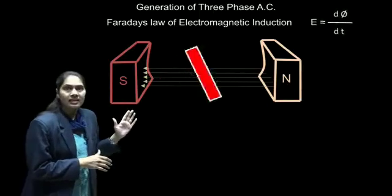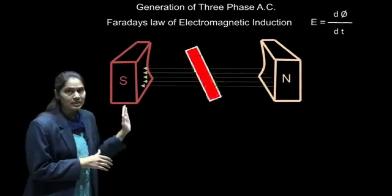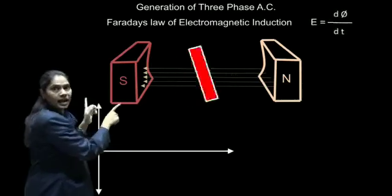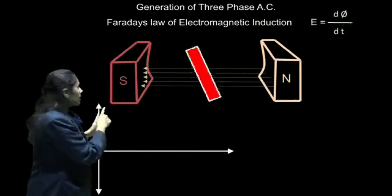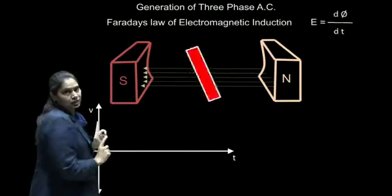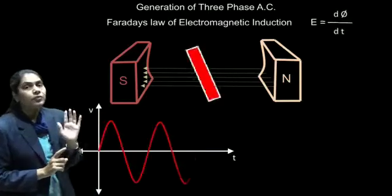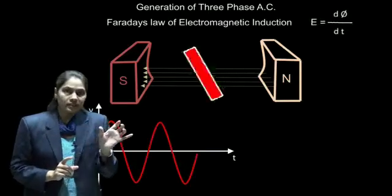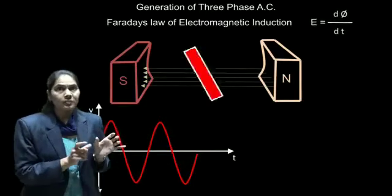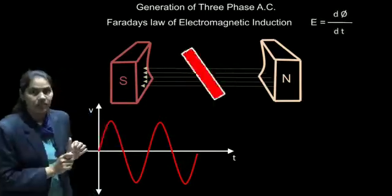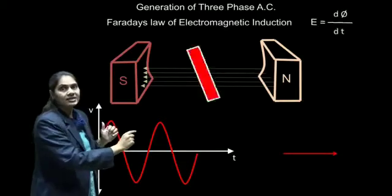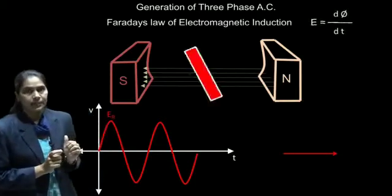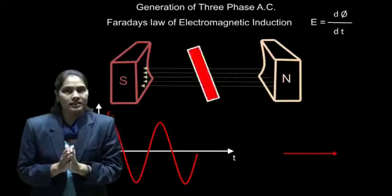Let ER be the EMF induced in that conductor. If we plot the waveform of that EMF, that waveform is starting from the zero point. If we plot the resultant phasor of this EMF, it will be coinciding with ER — coinciding with the x-axis with the magnitude of ER. This is about the first conductor.